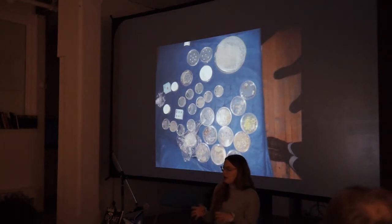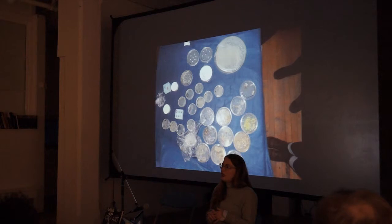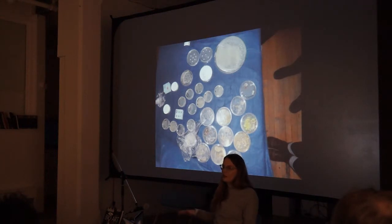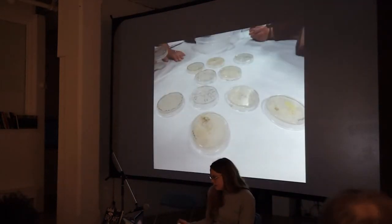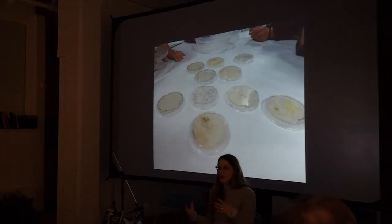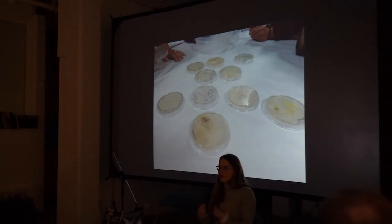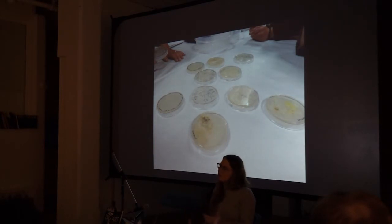We took petri dishes covered with agar—a substrate you can grow bacteria on—and spat on it, farted on it, stuck sticks in dirt and put the dirt on there, and saw what we could grow. We left it to gestate over the entire time of the workshop and thought about the aesthetics of what life looks like, what culture looks like. We had wonderful philosophical conversations about Aristotle again, and I felt validated for having thought about these philosophers from the beginning.